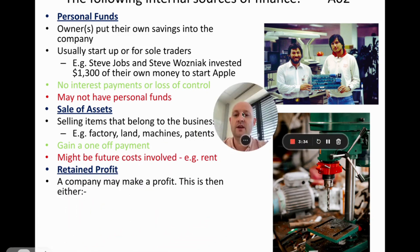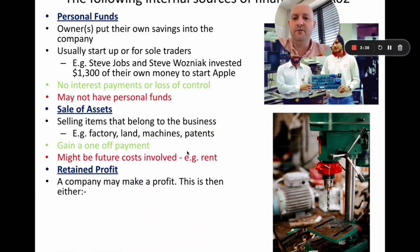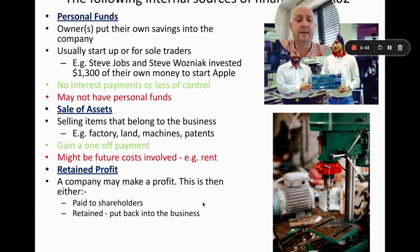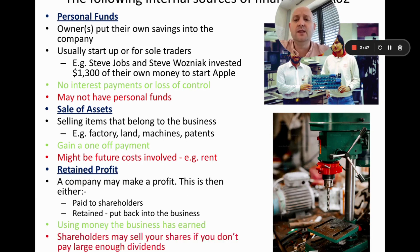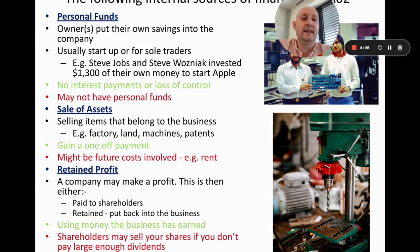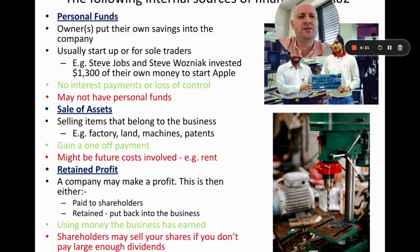Retained profit is the third internal source. When a company makes a profit, it can either pay it to shareholders as a dividend or retain it by putting it back into the business. The advantage is that it shows the business is profitable and requires no loss of control or debt. The disadvantage is that retaining too much profit means paying less in dividends, which may cause shareholders to sell their shares — though some shareholders may accept this if they believe in long-term growth.